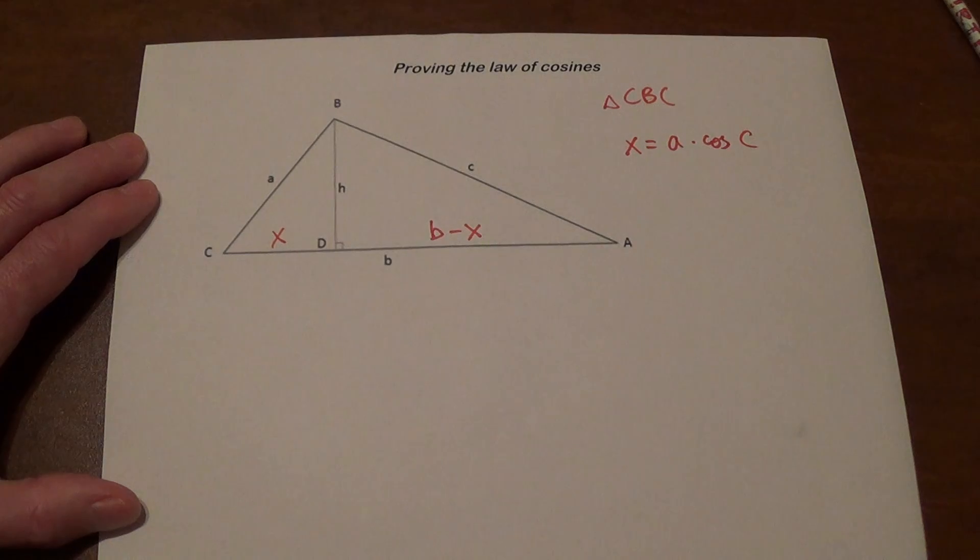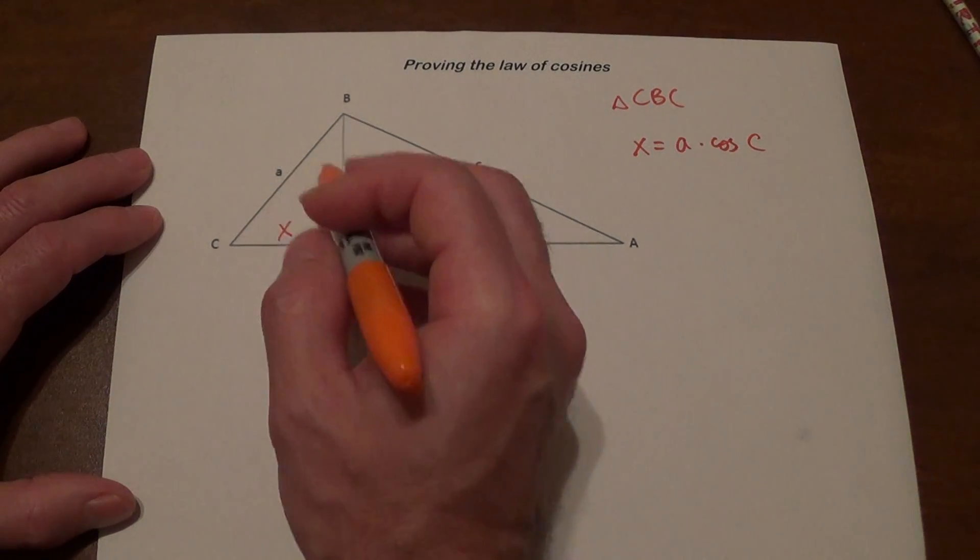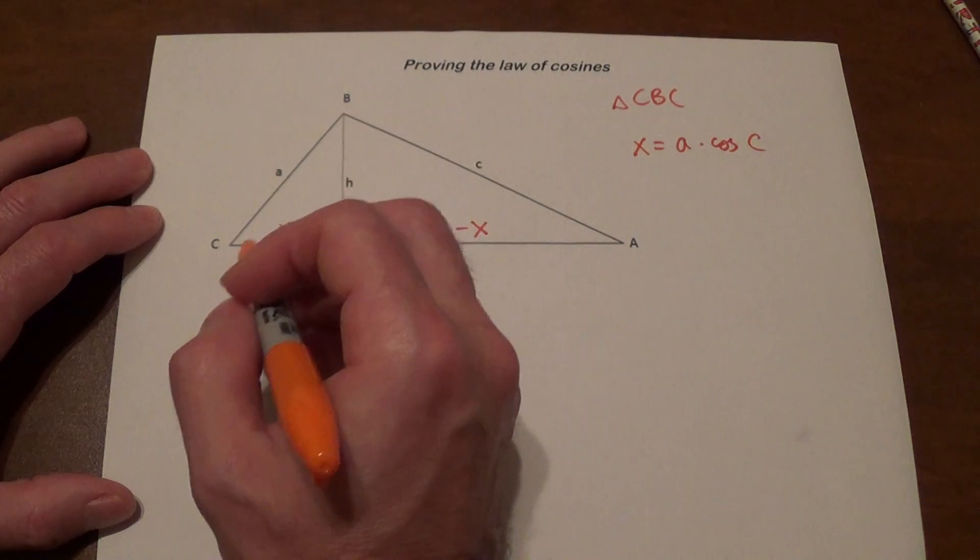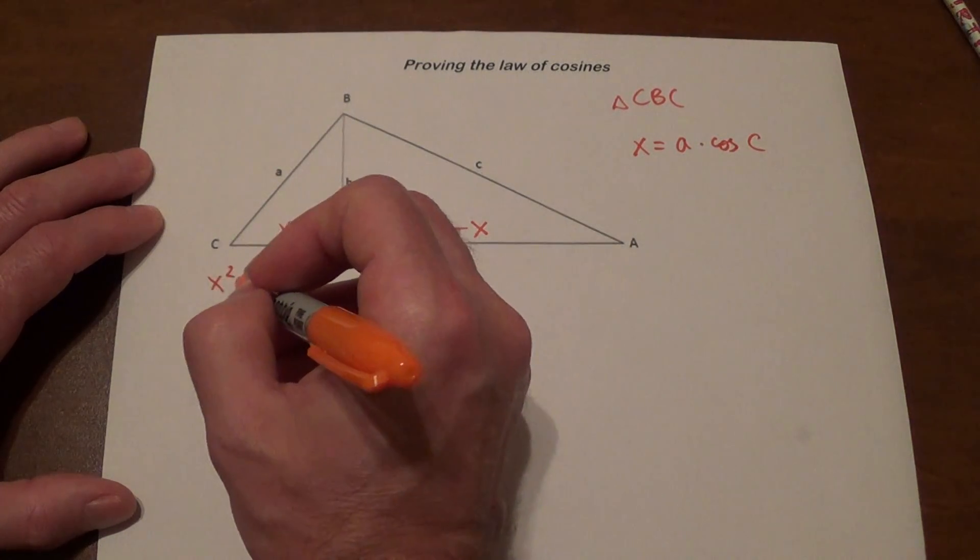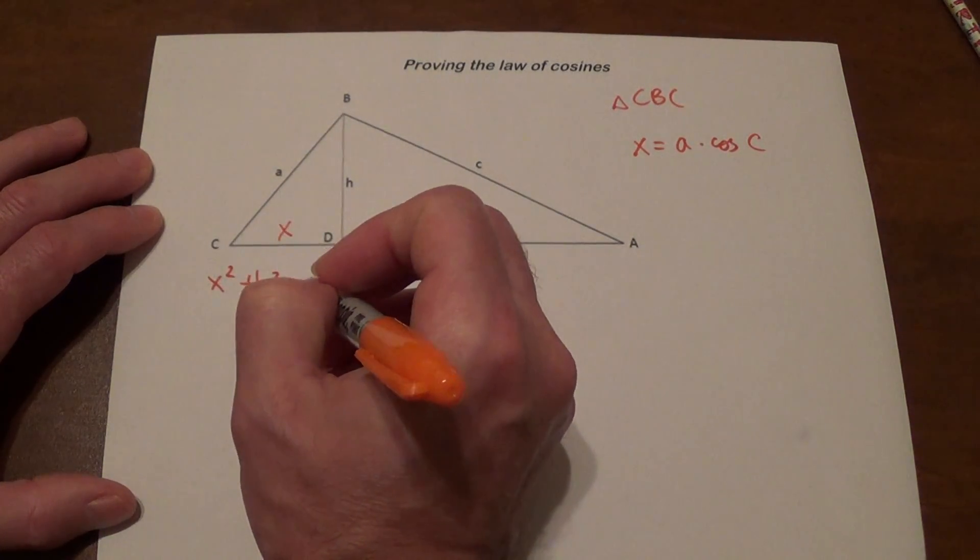Now we're going to take a look at two different right triangles. Let's start with this one, triangle CBD. We know that x squared plus h squared equals a squared.